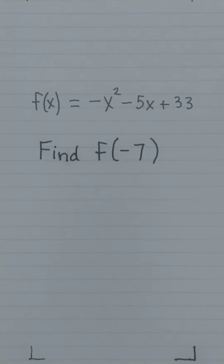We're given the function f of x equals negative x squared minus 5x plus 33, and we're asked to find f of negative 7, meaning the value of the function when x equals negative 7. Let's do this on the Casio.